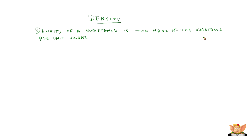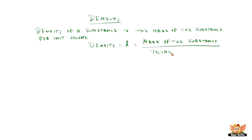Density of a substance is the mass of the substance per unit volume. That means the mass of one unit volume is called density. Density is generally termed as 'd', where small d equals mass of the substance divided by volume of the substance. Whenever you say per unit volume, you divide by that particular parameter. So d equals m divided by v, where m is the mass and v is the volume.